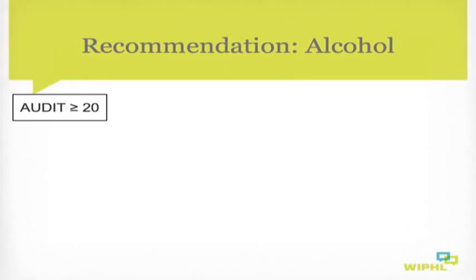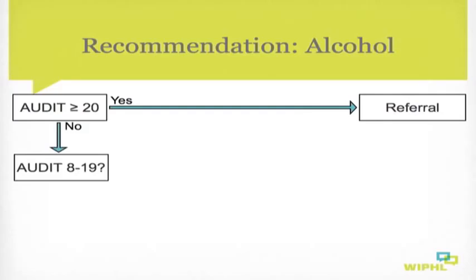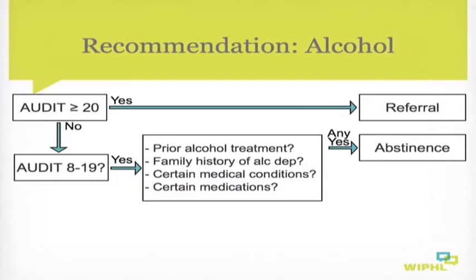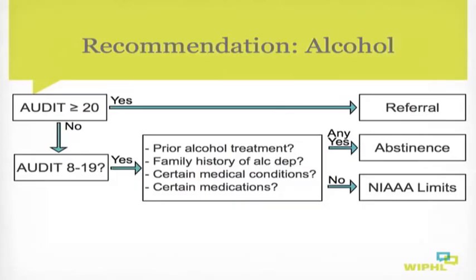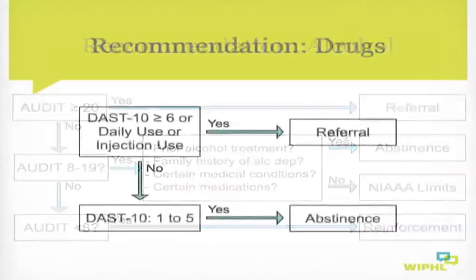The initial recommendation depends largely on the AUDIT score. If the AUDIT is 20 or greater, recommend referral for specialty-based assessment and possibly treatment. If the AUDIT score falls between 8 and 19, gather additional information: has the patient had alcohol treatment in the past, does alcohol dependence run in the family, do they have alcohol-sensitive medical conditions, or take medications unsafe to combine with alcohol? If yes to any, recommend abstinence; if no, recommend the low-risk cutoffs — no more than 14 per week or 4 per occasion for men, 7 per week or 3 per occasion for women.